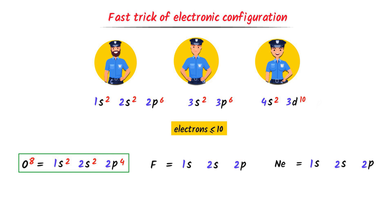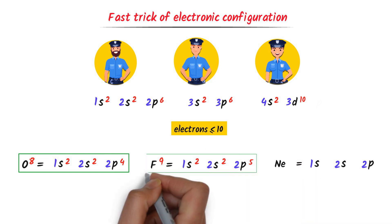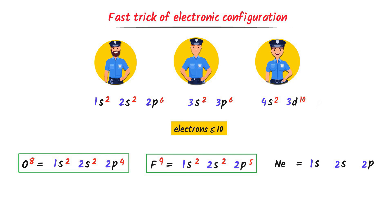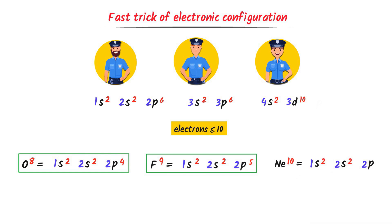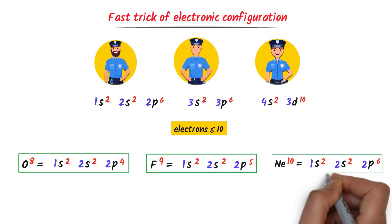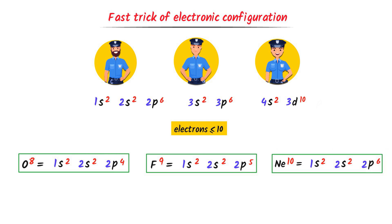Fluorine has 9 electrons: I put 2 in 1s, 2 in 2s — that's 4 — so the remaining 5 electrons go in 2p. Neon has 10 electrons: 2 in 1s, 2 in 2s, and 6 in 2p — 2+2+6 equals 10 electrons. I have successfully configured the electrons of these elements.